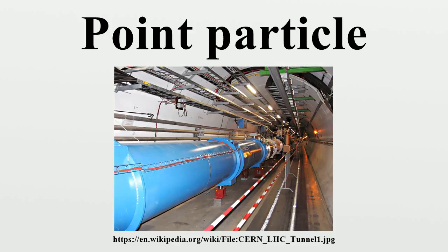In quantum mechanics, there is a distinction between an elementary particle and a composite particle. An elementary particle, such as an electron, quark, or photon, is a particle with no internal structure, whereas a composite particle, such as a proton or neutron, has an internal structure. However, neither elementary nor composite particles are spatially localized, because of the Heisenberg uncertainty principle. The particle wave packet always occupies a non-zero volume.